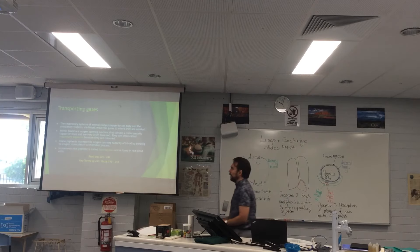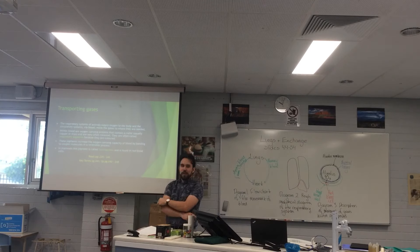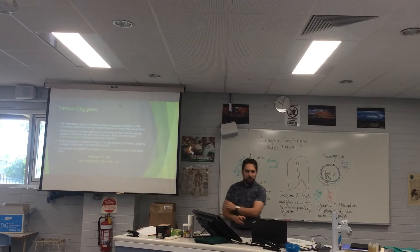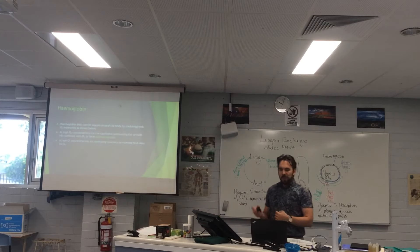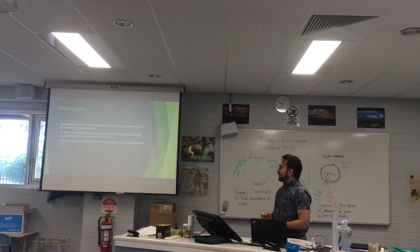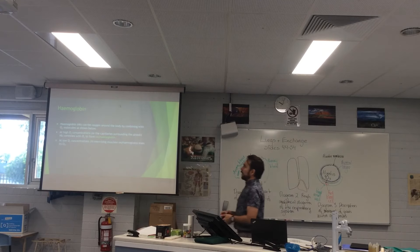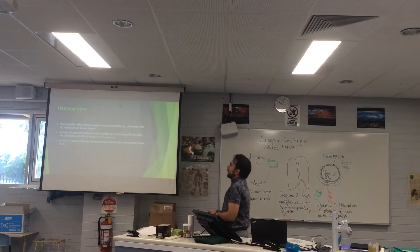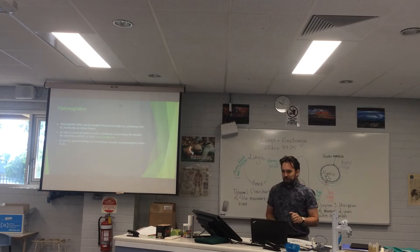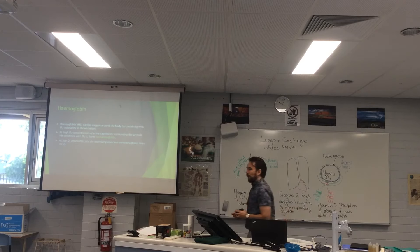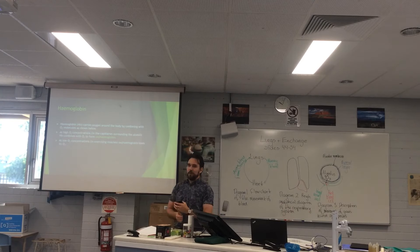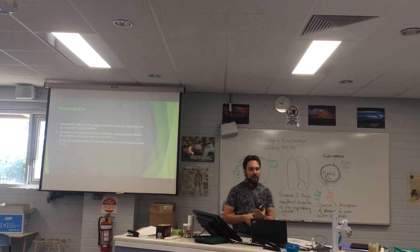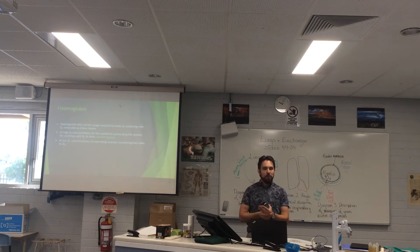In mammals, this pigment is called hemoglobin (Hb), and it is found mostly in red blood cells. At high O2 concentrations — in the capillaries surrounding the alveoli — hemoglobin combines with oxygen and forms oxyhemoglobin. At low O2 concentrations — that is, in exercising muscles — oxyhemoglobin loses its oxygen to become hemoglobin again. It's concentration-gradient-driven exchange.